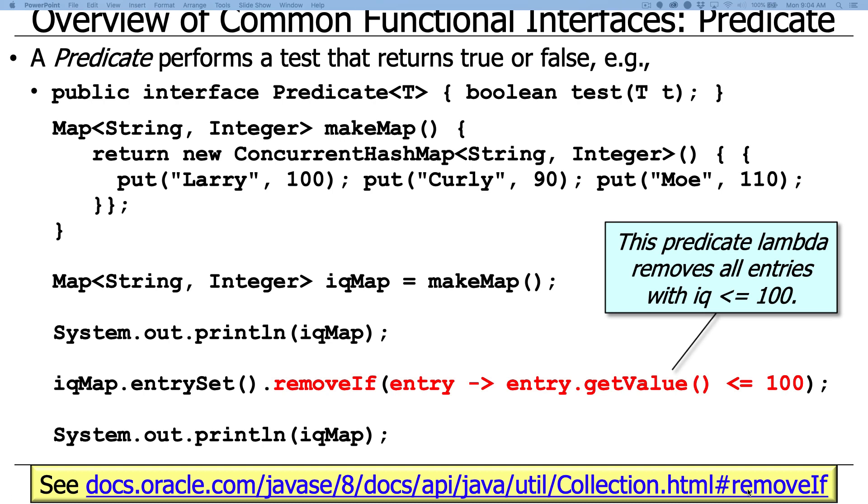So this is what's called a predicate lambda that tells the removeIf method to remove all entries that have an IQ, have a value of less than or equal to 100. So that'll get rid of poor Larry and poor Curly, but Moe will stick around because he was always the smartest of the three Stooges.